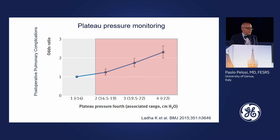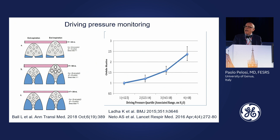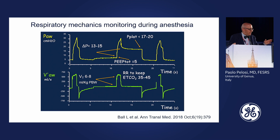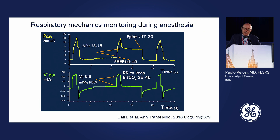Plateau pressure was discussed earlier: keep it no higher than 20 cmH2O, as higher values are associated with increased risk of complications. Also take care of driving pressure — keep it no higher than 13 cmH2O. In summary: start with tidal volume 6 to 8 mL/kg predicted body weight, adjust respiratory rate to target EtCO2 35–45, plateau pressure below 17–20 cmH2O, start PEEP at 5 and individualize, driving pressure below 13 cmH2O.